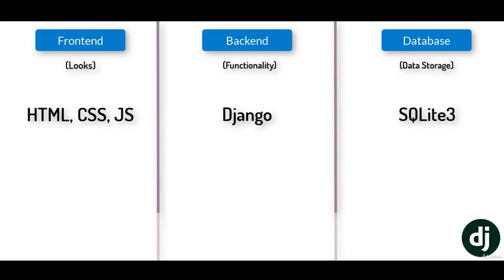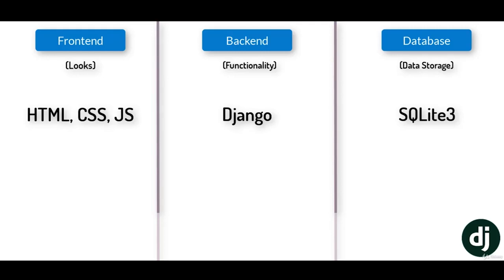For front end — HTML, CSS, and JavaScript. Basic knowledge of these three can help you create static pages without any functionality, just for viewing purposes. For high-end front end, you might go with JavaScript frameworks like Angular, Vue, React, and more. All the functionalities of a website are controlled by the back end — that is where Django comes in. If you master Django you can control the complete back end. For the database, we are going to use SQLite3, which is an inbuilt database with Python. So: HTML, CSS, and JavaScript with Bootstrap for front end; Django for back end; and SQLite3 for the database.